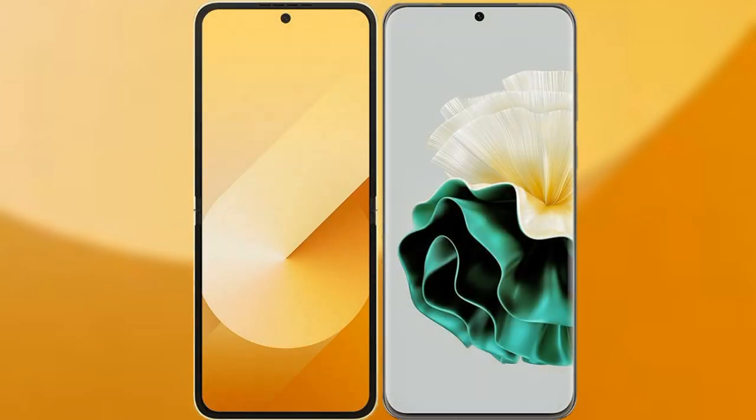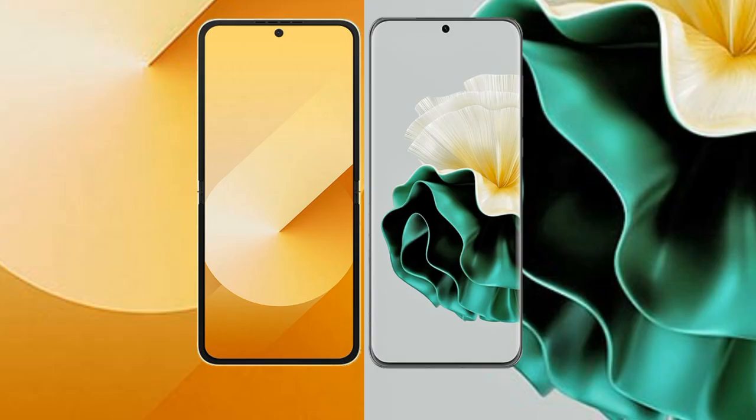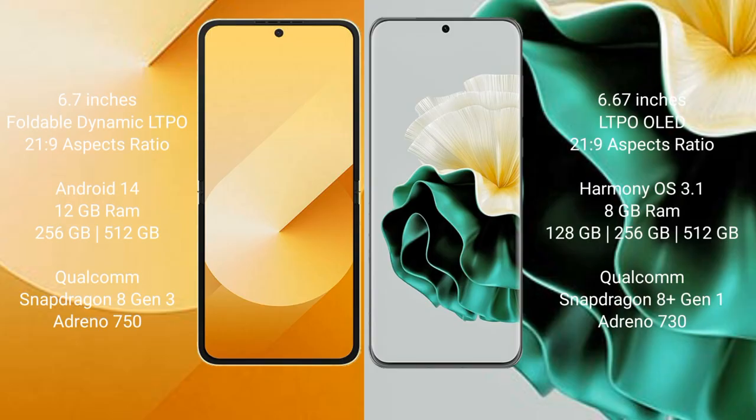I will compare the new Samsung Galaxy Z Fold 6 with Huawei P60. Samsung Galaxy Z Fold 6 comes with a 6.7-inch foldable dynamic LTPO AMOLED display and an aspect ratio of 21:9. Huawei P60 comes with a 6.67-inch LTPO LED display and an aspect ratio of 21:9.